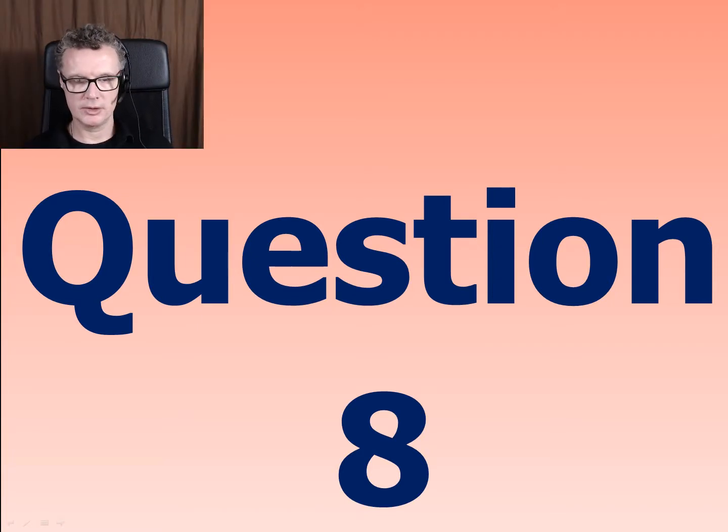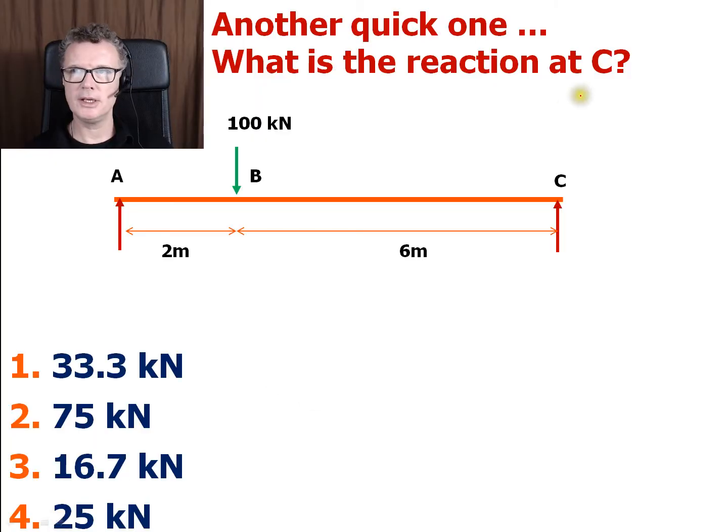Okay, question eight. Let's do another quick and easy reaction problem. Here we've got 100 kilonewtons two meters away from the A pivot B, and then we've got another six meters here to take us to C.